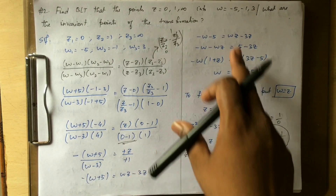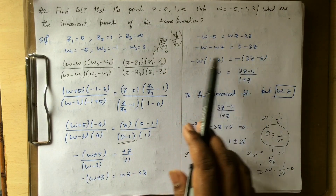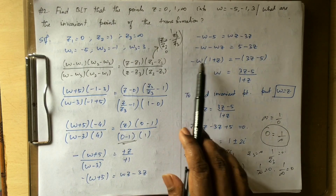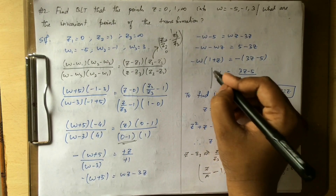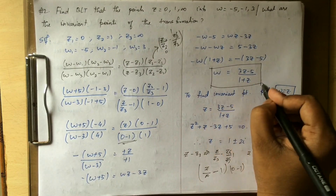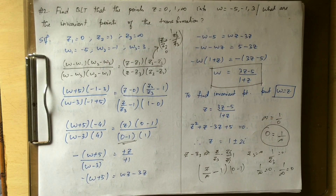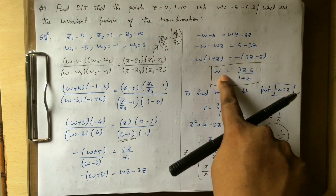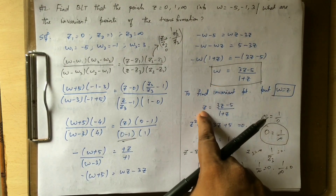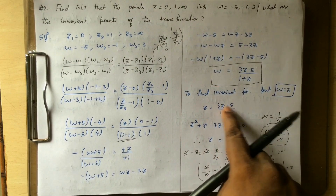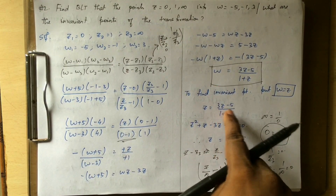After substitution and simplification, we arrive at the expression involving w minus 3, which gives us the bilinear transformation.